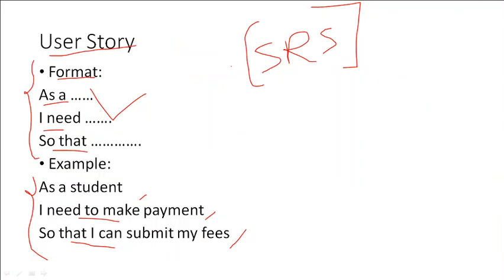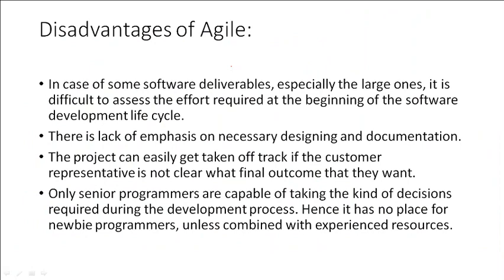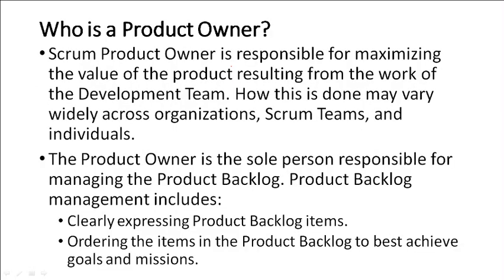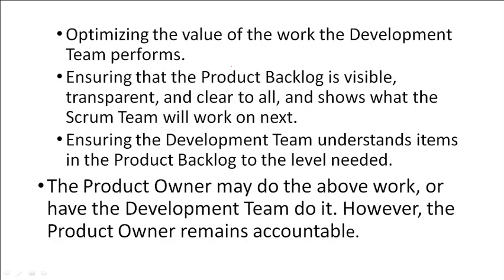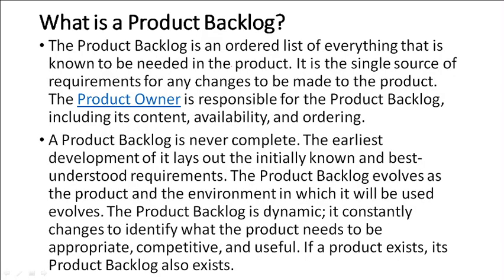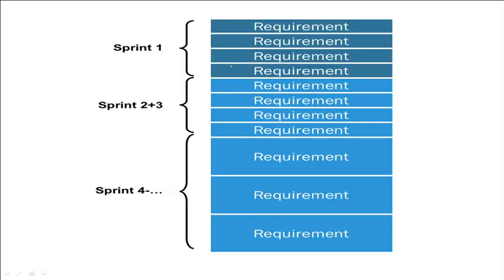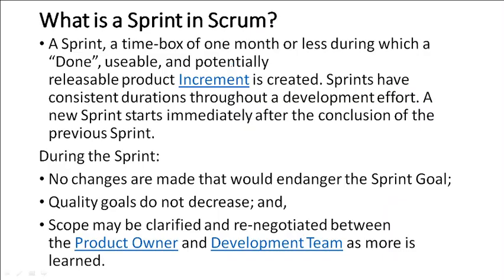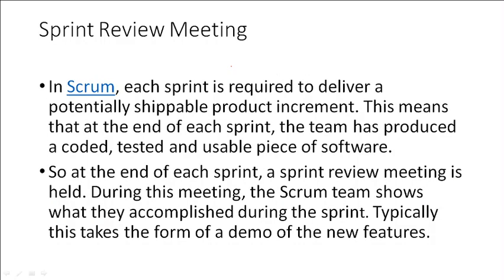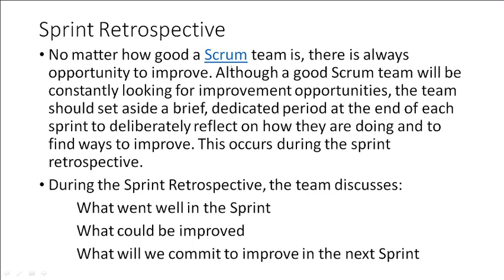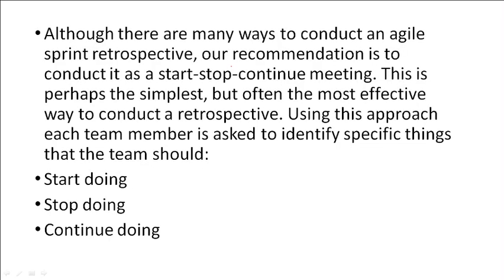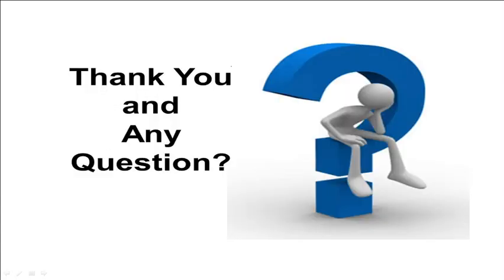This is the entire process of agile software development model. This model also has some disadvantages — every model has advantages as well as disadvantages. There is a description of all the members like product owner, product backlog, sprint, scrum sprint planning meeting, review meeting, and sprint retrospective. Thank you all.